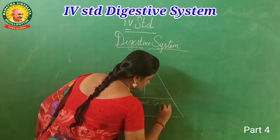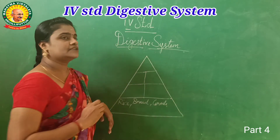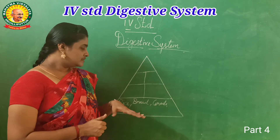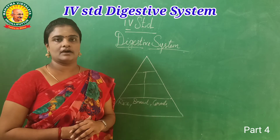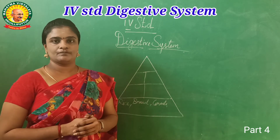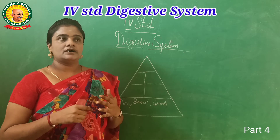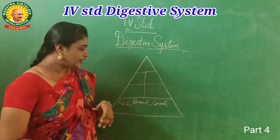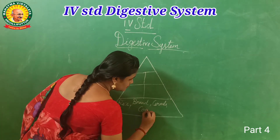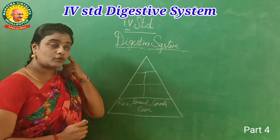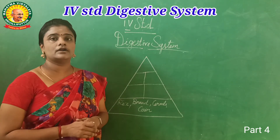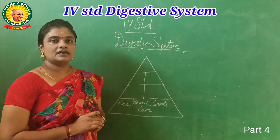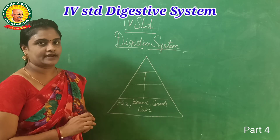I will tell you. Cereal — cereal comes under carbohydrate items. What about corn? Corn is a fiber-rich item. So corn comes under the fiber-rich items, not carbohydrates.